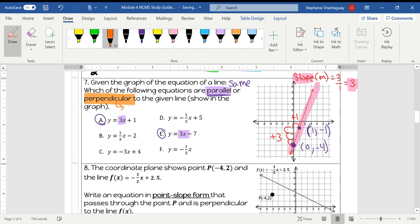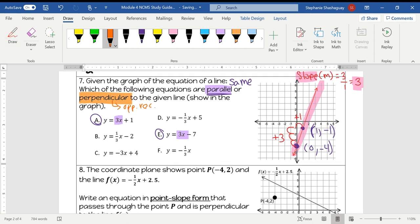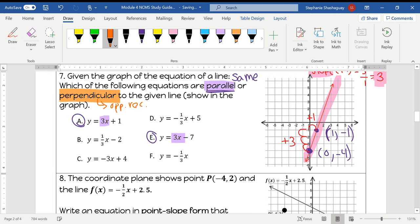Now perpendicular, remember, is a little bit trickier. Perpendicular is your opposite reciprocal slope. Remember opposite means that if it's positive, like here we have a positive 3, it's going to become negative. So our opposite reciprocal slope is going to be equal to a negative 1 over 3 because 1 over 3 is the reciprocal of 3.